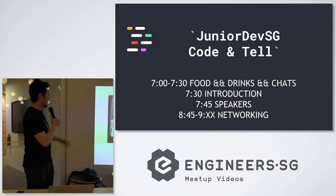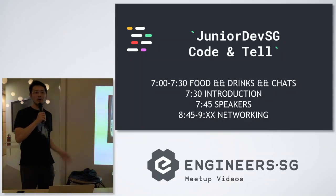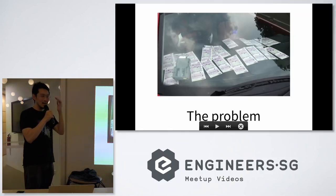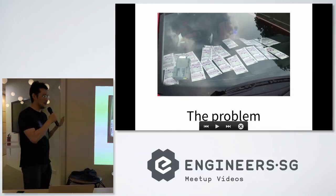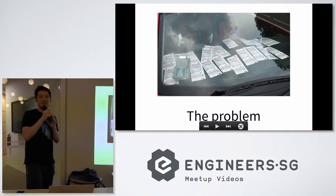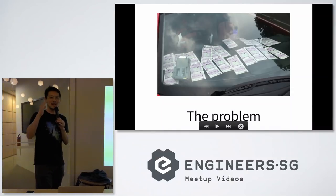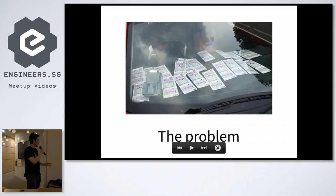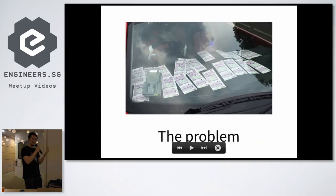For those of you who aren't familiar, this is the problem we're trying to solve. When you want to park your car in Singapore you have to use these paper parking coupons and they're really annoying. The biggest problem is that if you're in a meeting and the meeting is running long, as the minutes tick over you just know you're going to get a parking ticket and there's nothing you can do about it. It creates this really antagonistic relationship between you and these little pieces of paper.